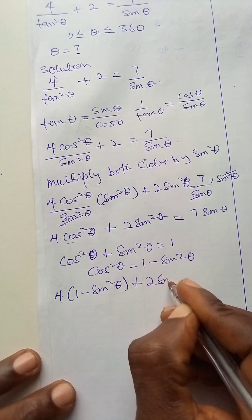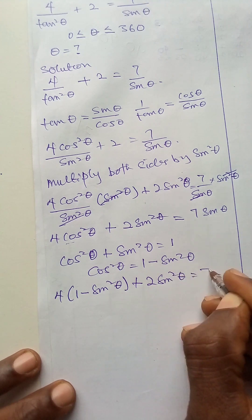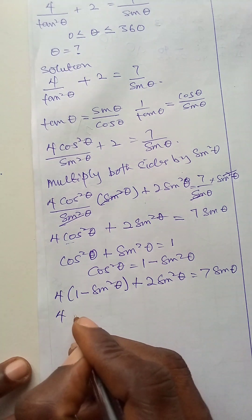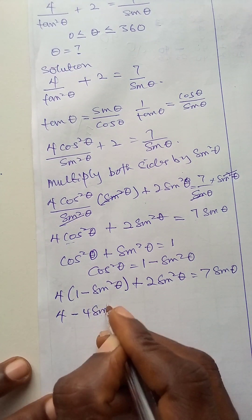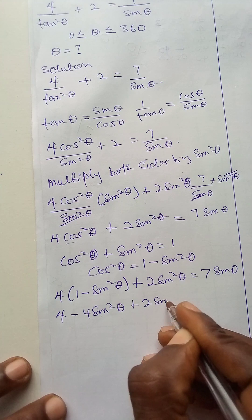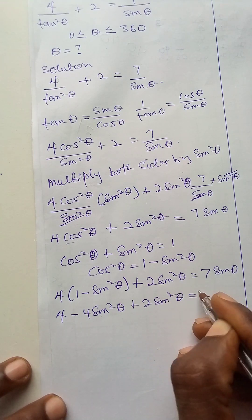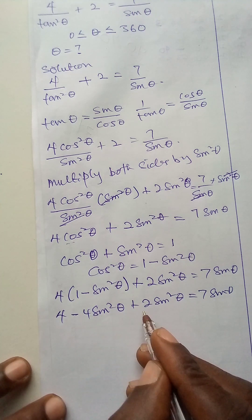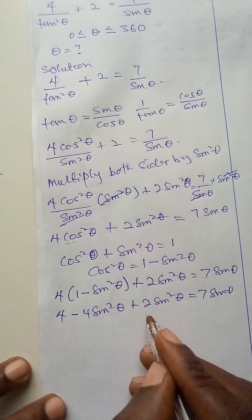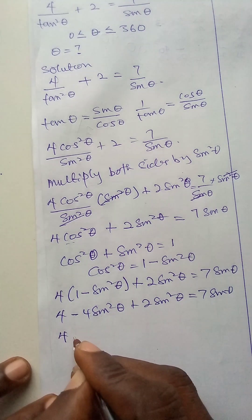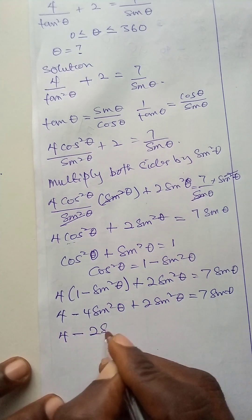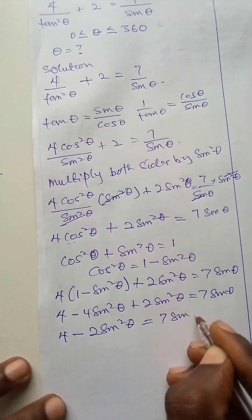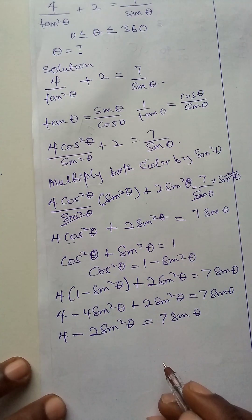Plus 2 sine squared theta is equal to 7 sine theta. Let me open this bracket: 4 minus 4 sine squared theta plus 2 sine squared theta is equal to 7 sine theta. Subtracting, minus 4 and plus 2 gives us: 4 minus 2 sine squared theta is equal to 7 sine theta.